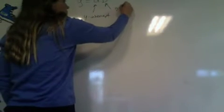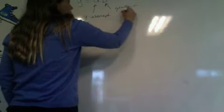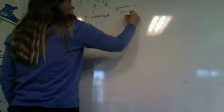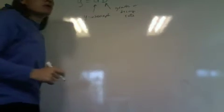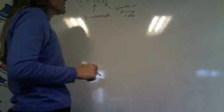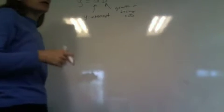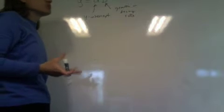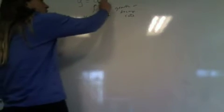B is either your growth or decay rate. It just depends on the problem you're working with. If it's growth, b is going to be a number greater than 1. If it's decay, it's going to be a number between 0 and less than 1, so it's going to be a decimal. But you're not going to have a growth rate that's negative. That's impossible.